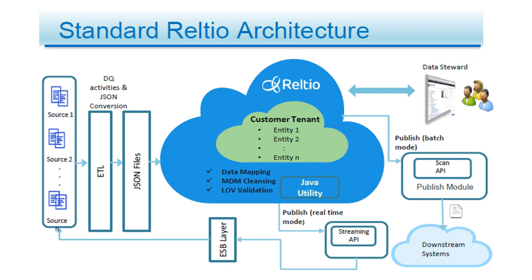Using the Java utility we can also do multiple things — push data and get data. One very important thing: Reltio MDM does not allow anyone to directly access its database. So there is no direct access to the NoSQL Cassandra database — everything must go through the streaming API or a publish batch mode.